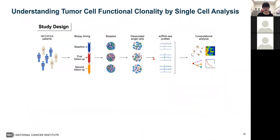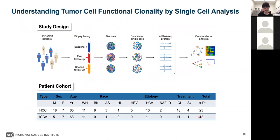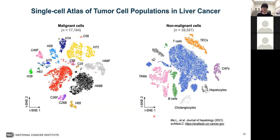To model tumor cell functional clonality and its evolution, we performed single-cell RNA sequencing of tumor samples collected at baseline and different follow-up time points during treatment. This study includes 25 ICC patients and 12 HCC patients with different etiologies. In total, we obtained about 17,000 malignant cells and about 40,000 non-malignant cells. Malignant cells formed patient-specific clusters indicating inter-tumor heterogeneity, and cells within tumor samples differed in their transcriptomic profiles, showing evidence of intra-tumor heterogeneity, consistent with our previous findings.